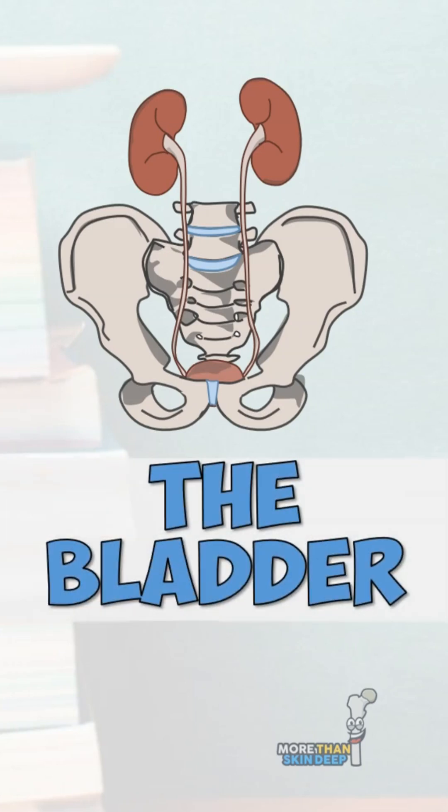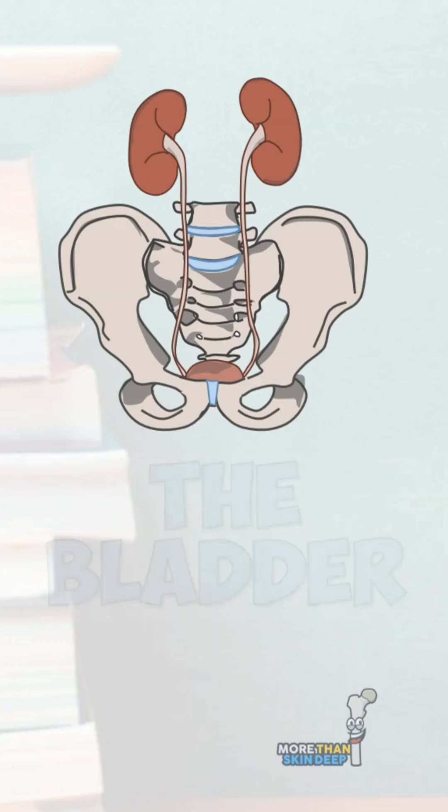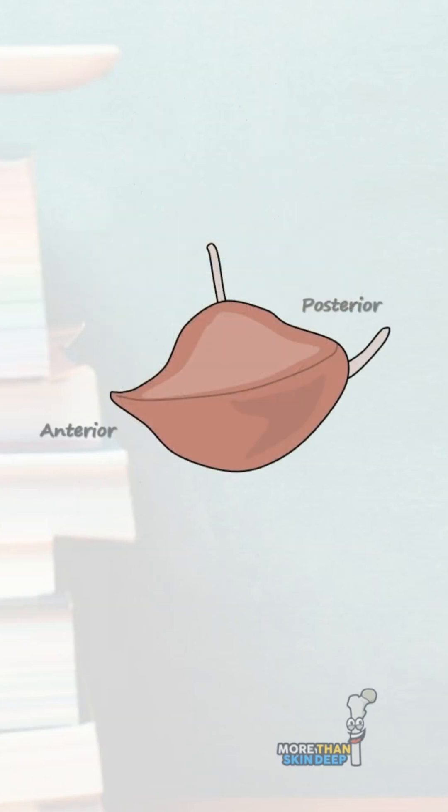The Anatomy of the Bladder. You have a single urinary bladder which usually lies anteriorly within the pelvic cavity. It is hollow and distensible and acts to store urine and help expel it when needed.